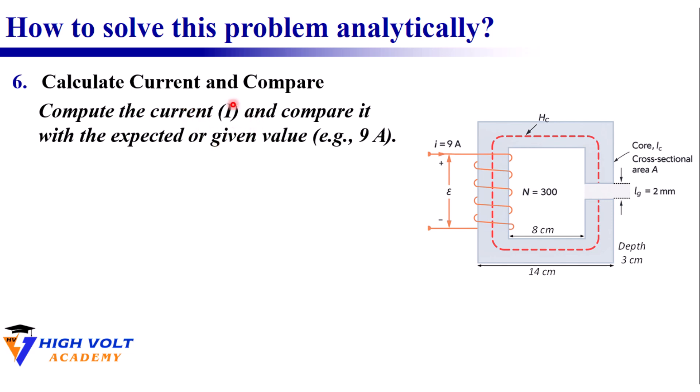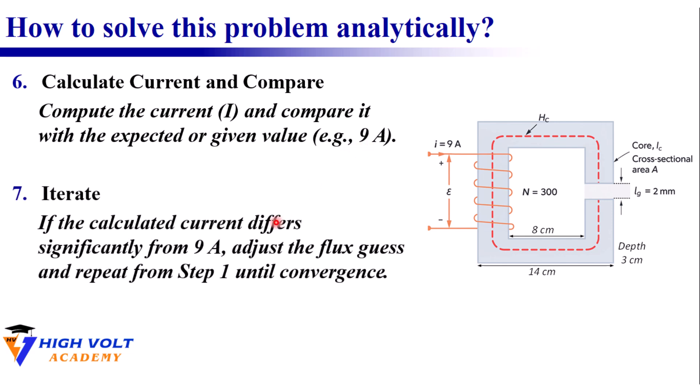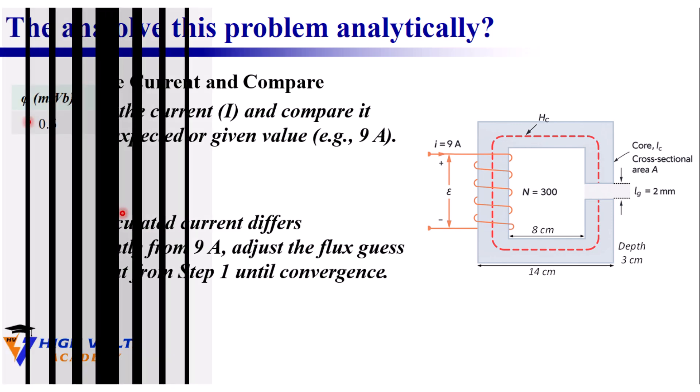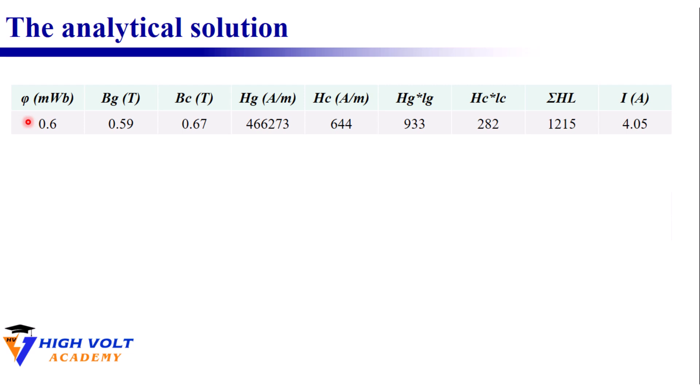Of course we already know from the COMSOL visualization that Hc is not constant along the core, but for the analytical method we assume an average value to keep the math manageable. From there we can compute the current by dividing the total magnetomotive force by the number of turns and compare it with the 9 ampere DC source. If it differs, we adjust and iterate.